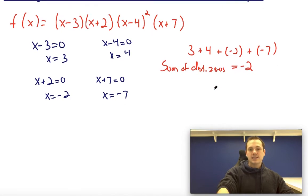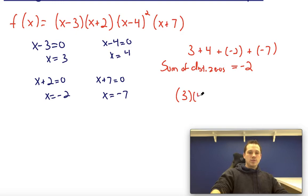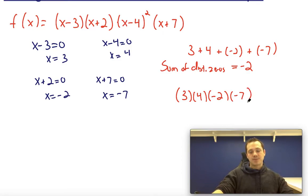Now what if we wanted to find the product? Well, all we would have to do is multiply these values. So we multiply 3 by 4 by negative 2 by negative 7. And the easiest way to do this is just to multiply straight across. So 3 times 4 is 12, 12 times negative 2 is negative 24.